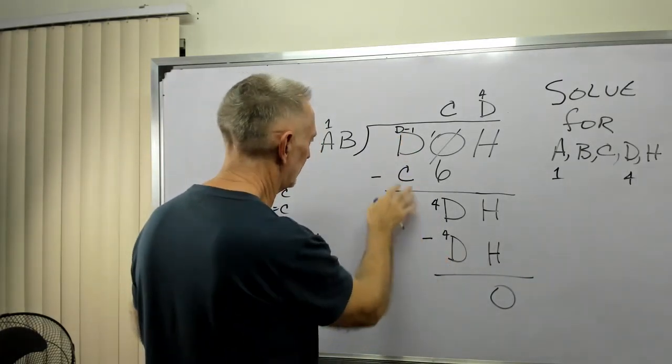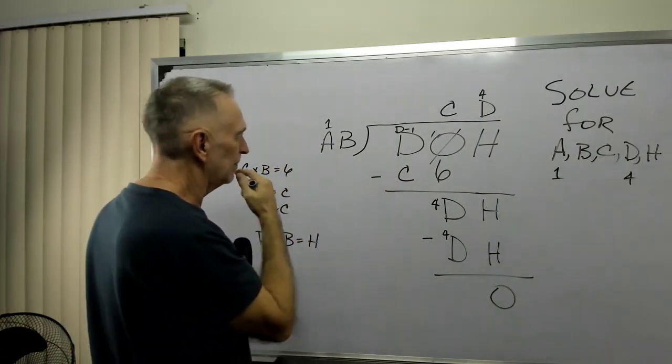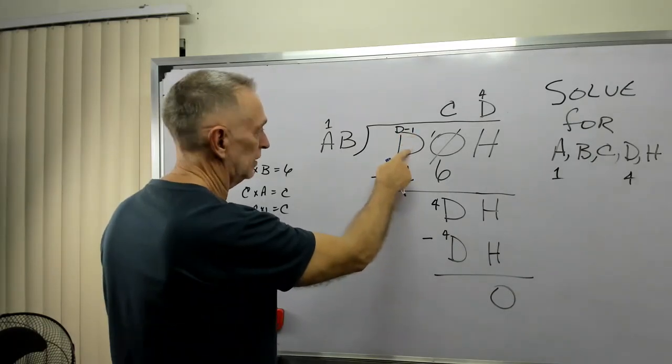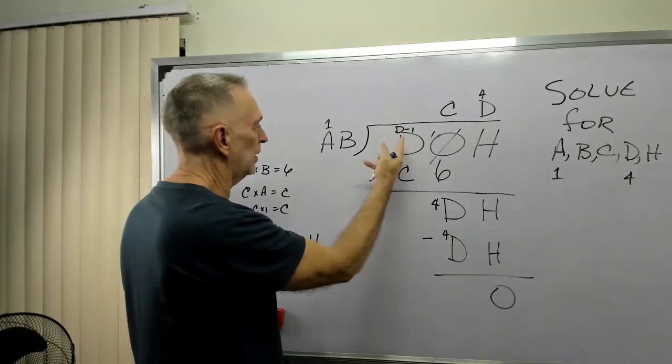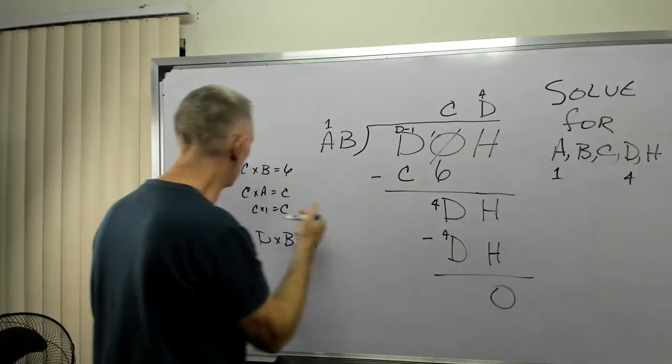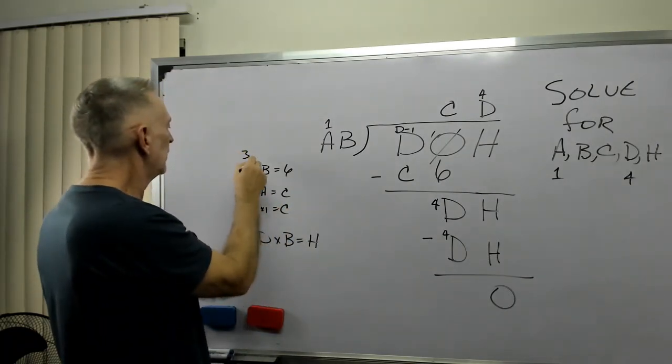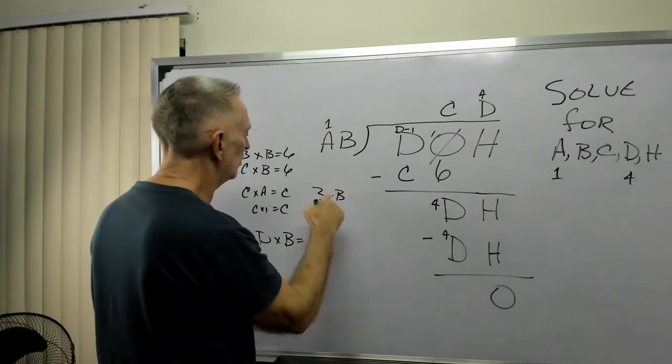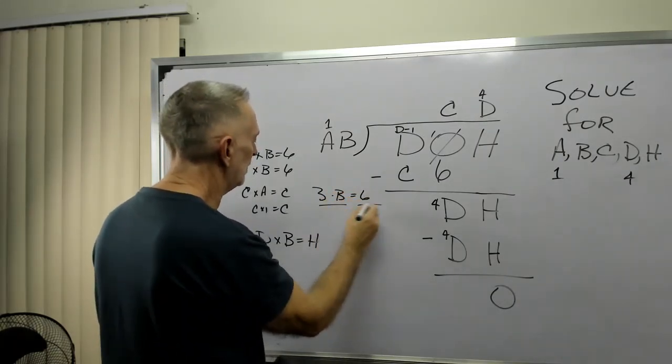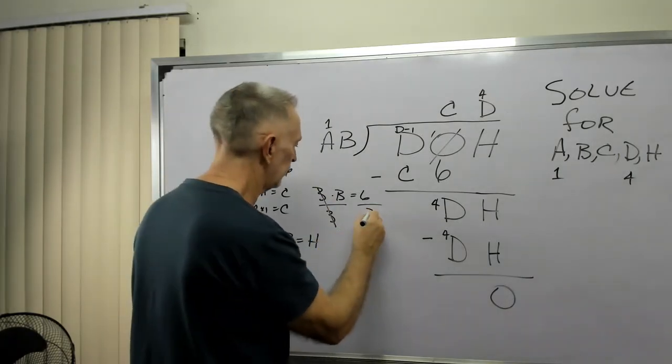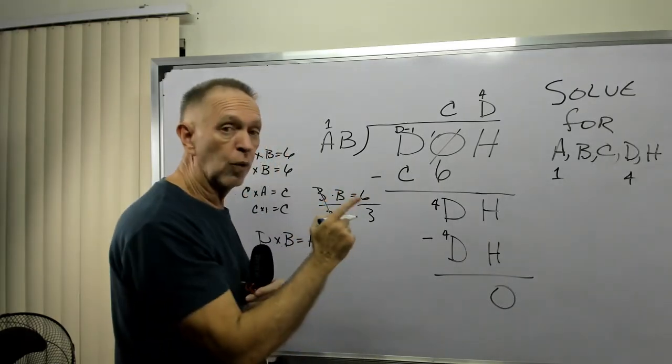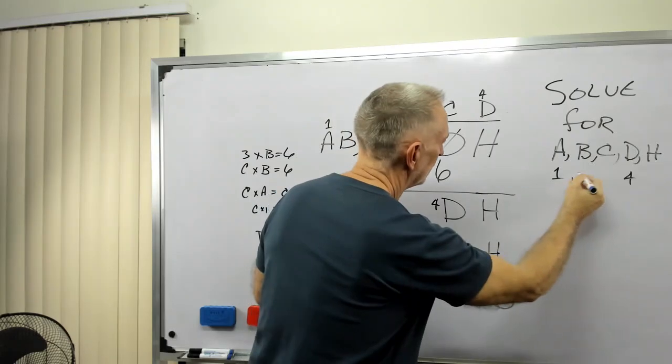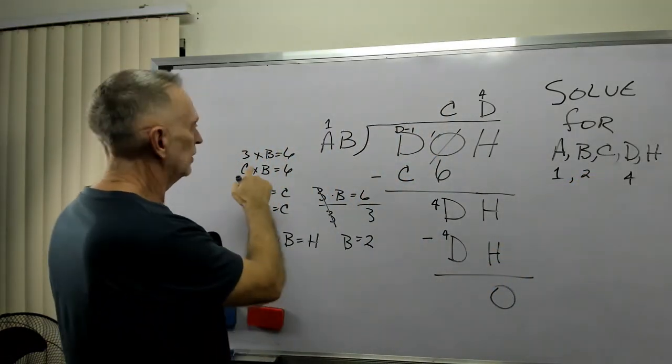We'll go back to this C here because we're going to need that in a minute for B. We had determined D was 4. D minus 1, if D is 4, 4 minus 1 is 3. 3 minus 3 equals 0. So we know C is 3. Now I'll have 3 times B equals 6. 3B equals 6. If I divide both sides by 3, 6 divided by 3, so B equals 2. So now I'll have B equals 2 and C equals 3.